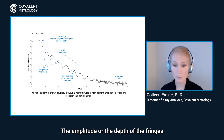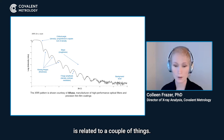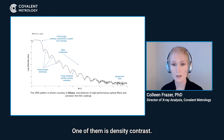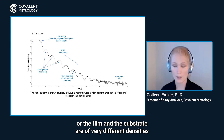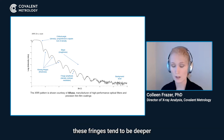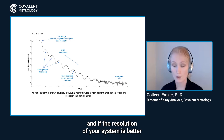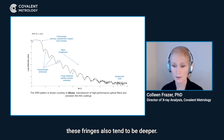The amplitude or the depth of the fringes is related to a couple of things. One of them is density contrast — if the film layers or the film and the substrate are very different in density, these fringes tend to be deeper. And if the resolution of your system is better, these fringes also tend to be deeper.